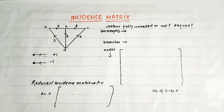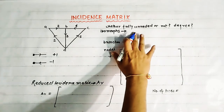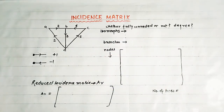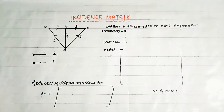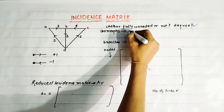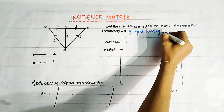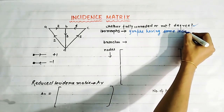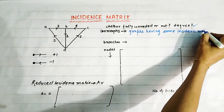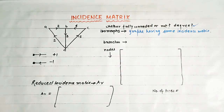First I want to ask you a question: whether this graph is fully connected or not. I already told you the concept of a fully connected graph, and you have to tell the degree of this graph — please answer in the comment box. Now, what are isomorphs? Isomorphs are graphs having the same incidence matrix.